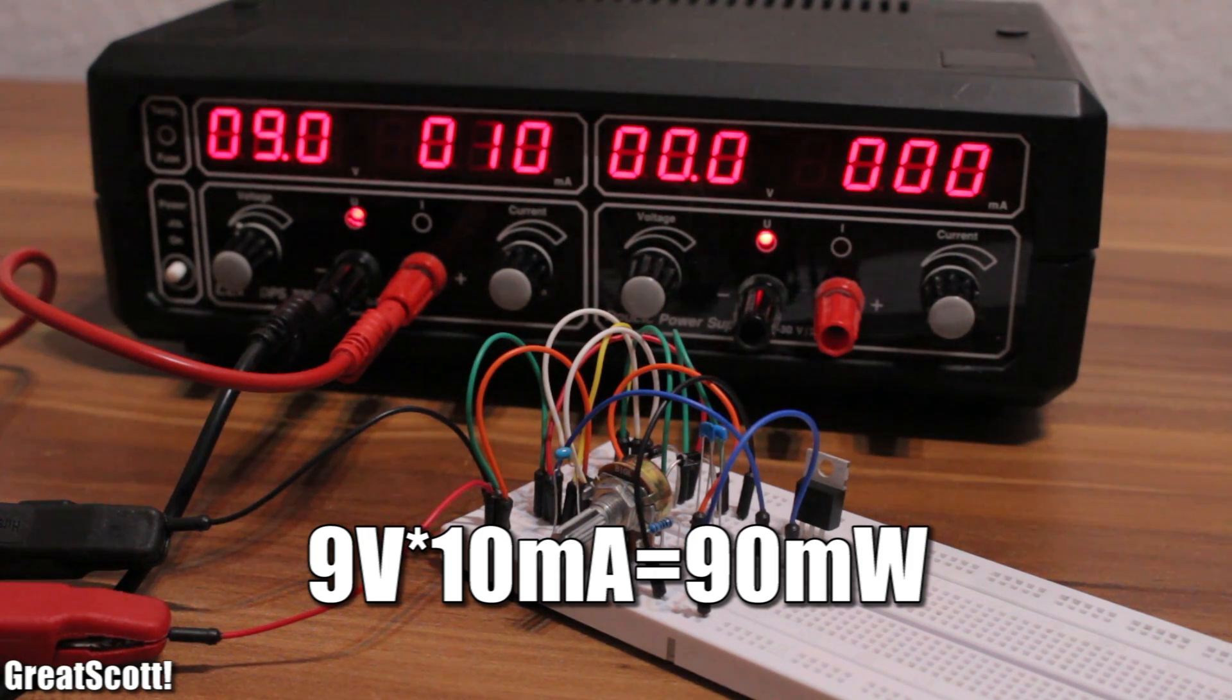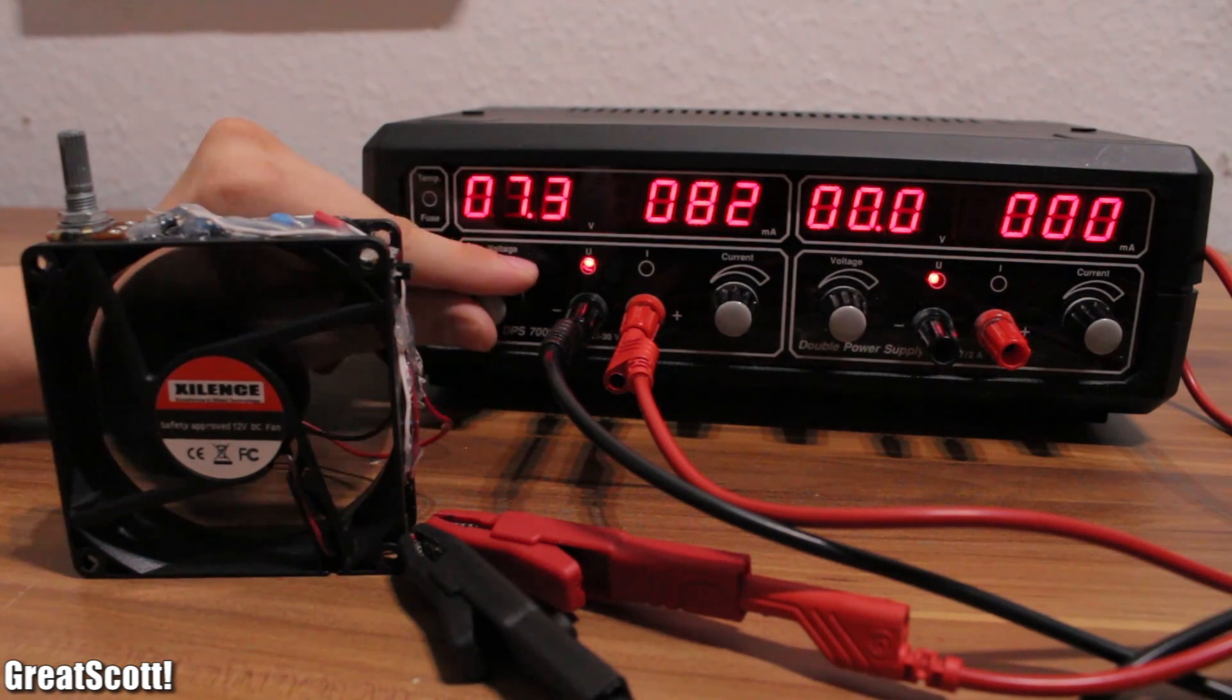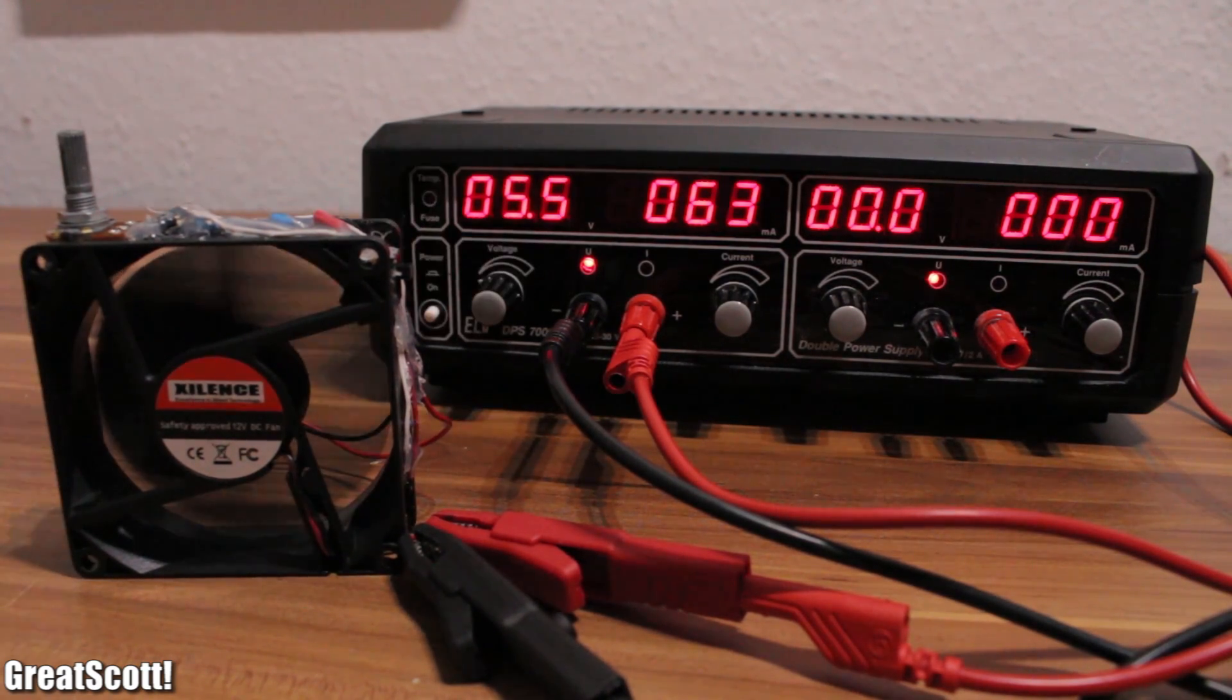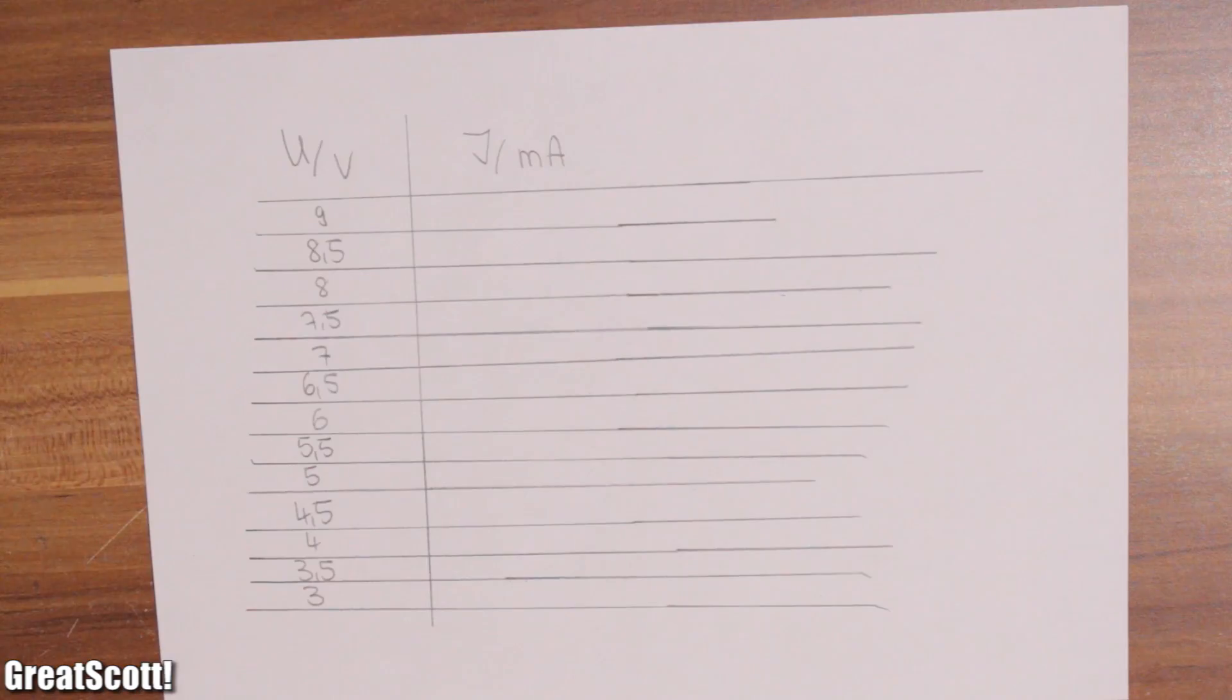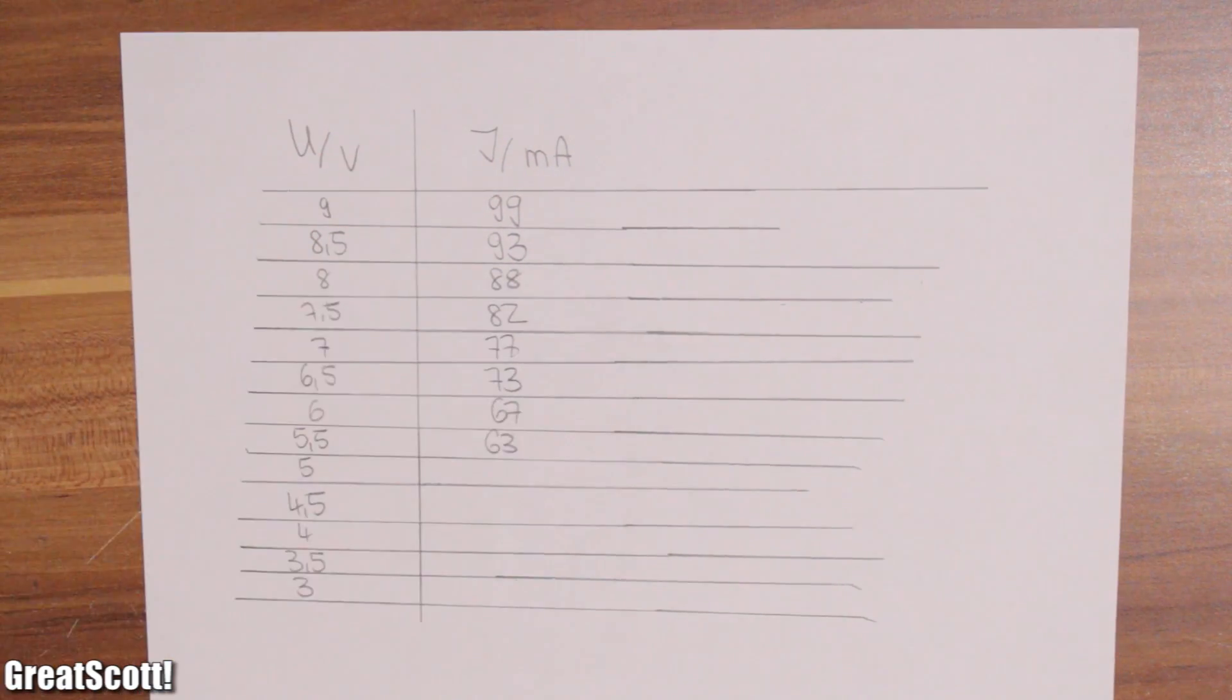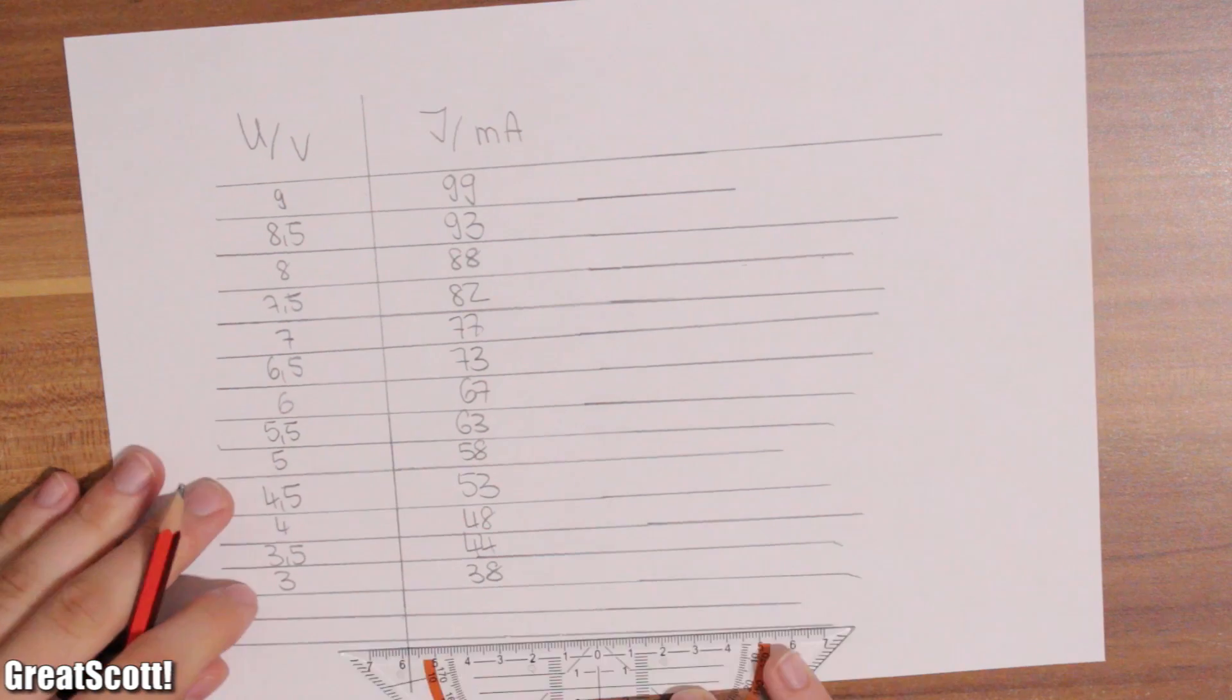Practically. Time for the potentiometer. To calculate this right we have to measure the characteristic line of the fan. So I hook it up to my bench power supply. I start at 9 volts and write down the amps. Then I go down by 0.5 volts and write down the amps again and so on. Remember kids, the only difference between screwing around and science is writing it down. In the end I have this nice chart which will help me now.